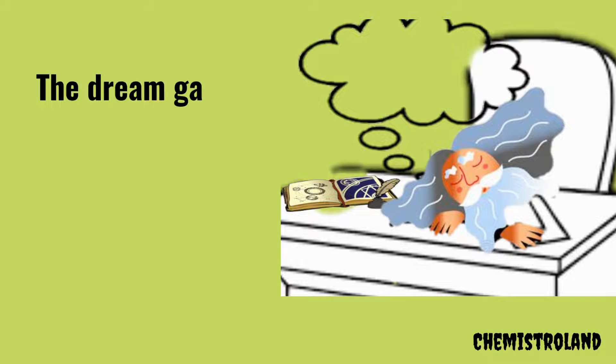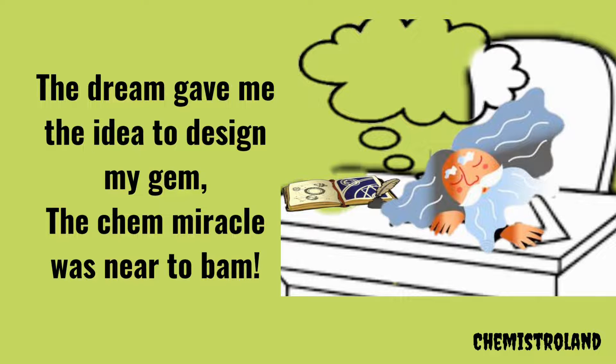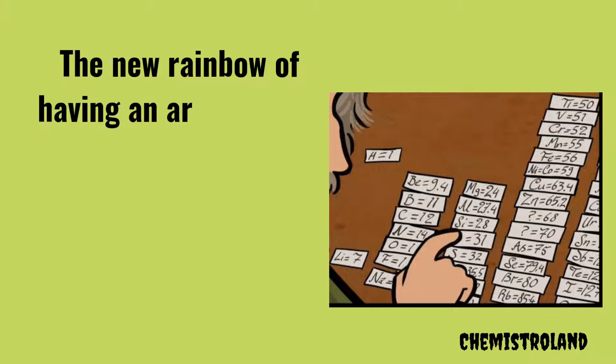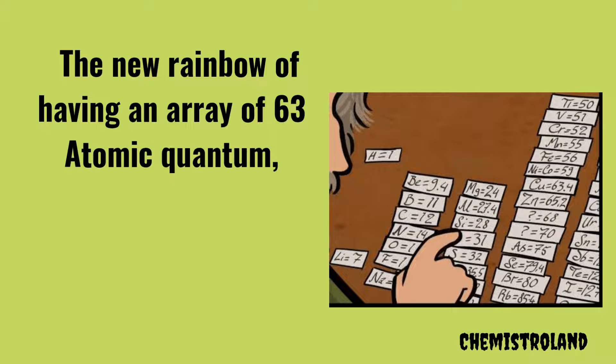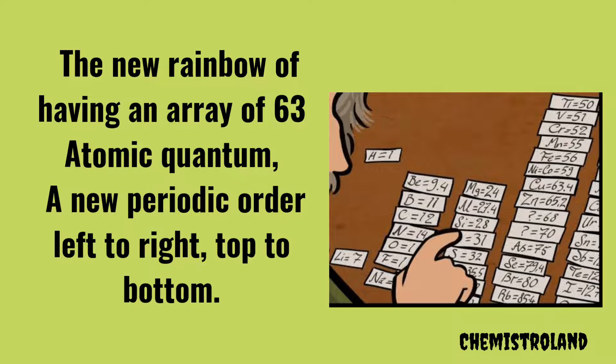The dream gave me the idea to design my gem. The chem miracle was near to bam. The new rainbow of having an array of 63 atomic quantum. A new periodic order left to right, top to bottom.